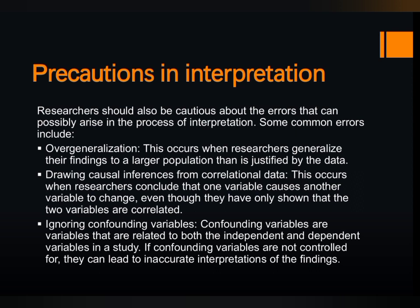The second precaution is drawing causal inferences from correlational data. Correlational data means one variable can affect another variable — one variable causes another to change. For example, height and weight: if a person is taller, their weight will also be more. Similarly, temperature and rainfall are correlated. We need to draw inferences from correlational data very carefully.